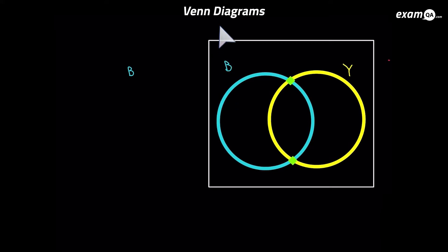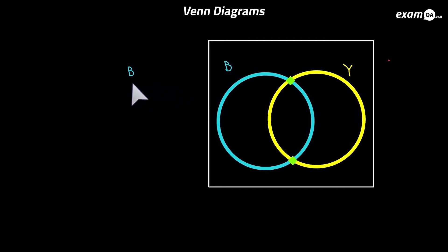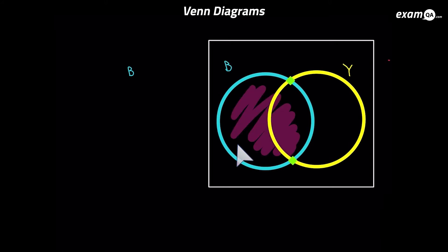We've got two circles here, B and Y. I'm going to show you first what regions of this diagram mean. For example, here we've got B. Which part of this diagram is B? That's a very straightforward one — it's just everything in the B circle, all of this bit.